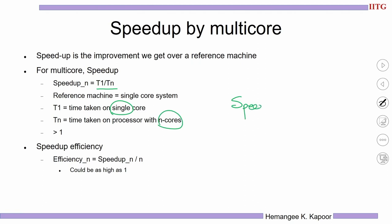Speedup is time taken on a single core divided by time taken on an n-core system. T1 is always going to be greater than Tn because on a multi-core I can run the same program, exploit some parallelism and have smaller execution time. If I take this ratio, this ratio will always be greater than 1. So the speedup when I am using n cores is always greater than or equal to 1.